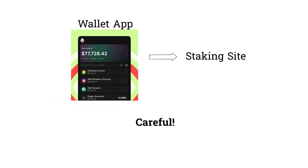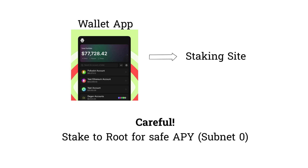Now if you're new, I'd consider not directly investing in subnets until you're more comfortable. Even though their APY can be very appealing, their price in tau can be very volatile. The safest way to get your feet wet is to stake to root, also called subnet zero, for a risk-free but reasonable APY.